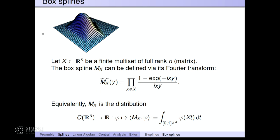So what does it have to do with zonotopes, and what does it have to do with combinatorics, statistical mechanics, partition functions, and all that stuff? Here is the multivariate generalization that de Boor, Herlich, Riemenschneider, Damian Michelli, and many other people created — this was around the 1980s. If you look at the definition, this is one of several equivalent definitions of box splines. You will see that they are based on a matrix of directions, which I will call capital X. Some of this notation is a little bit unconventional.